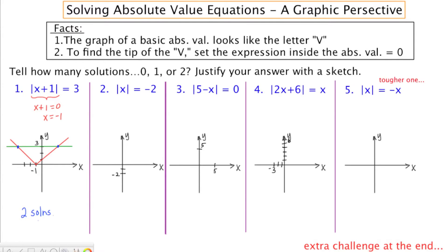Moving on to example number two. The left-hand side, again, is an absolute value expression. Its graph is going to look like a V. To figure out where the point of this V is, we're going to set the inside equal to zero. So this graph is going to be a V with a tip at zero.